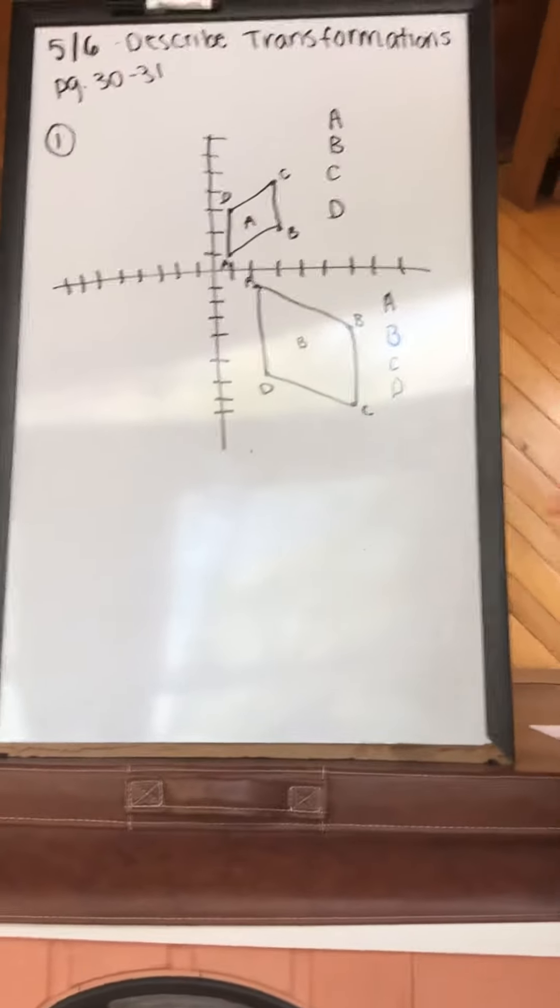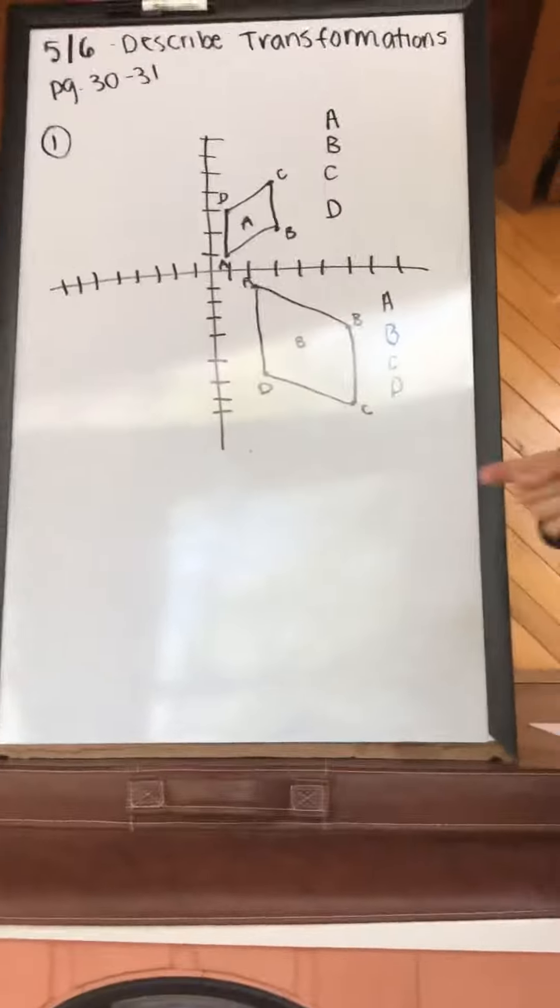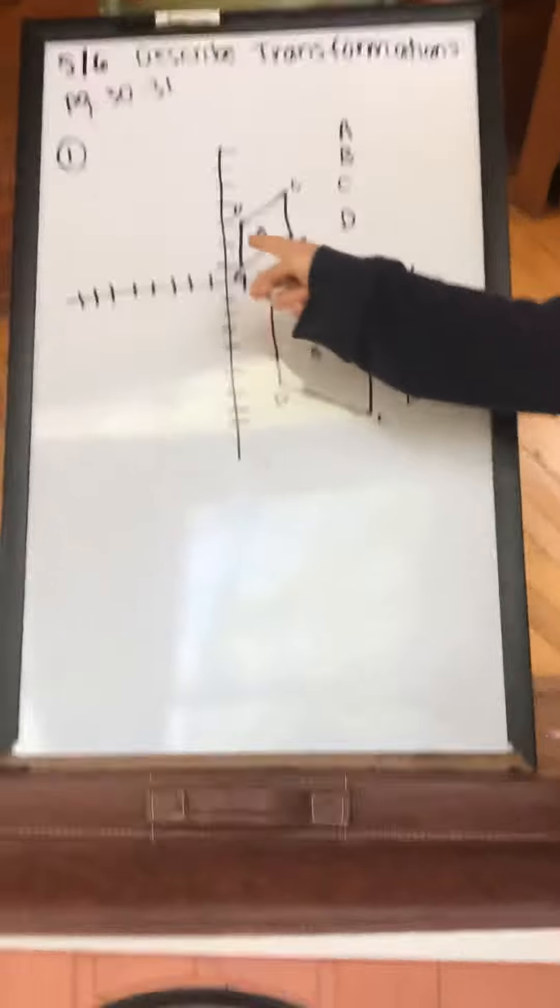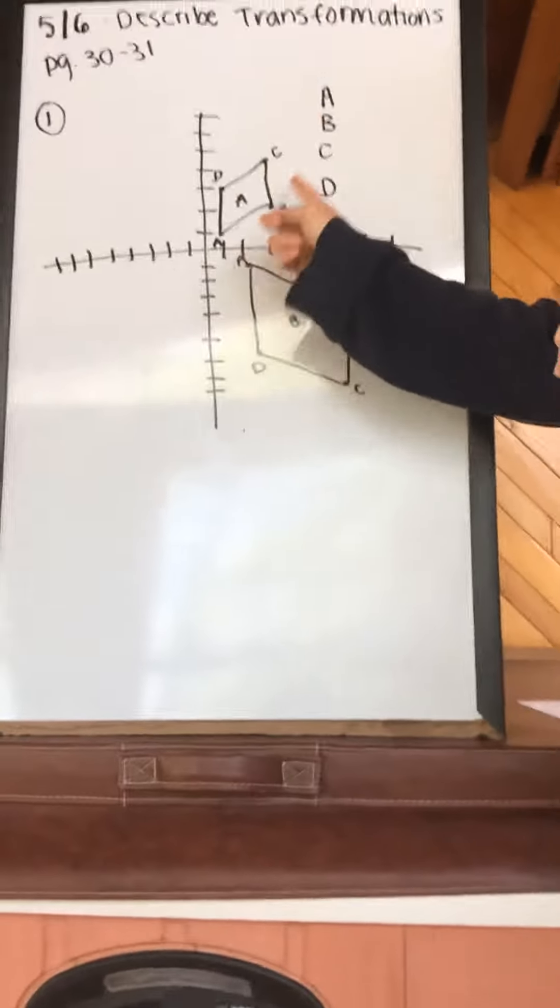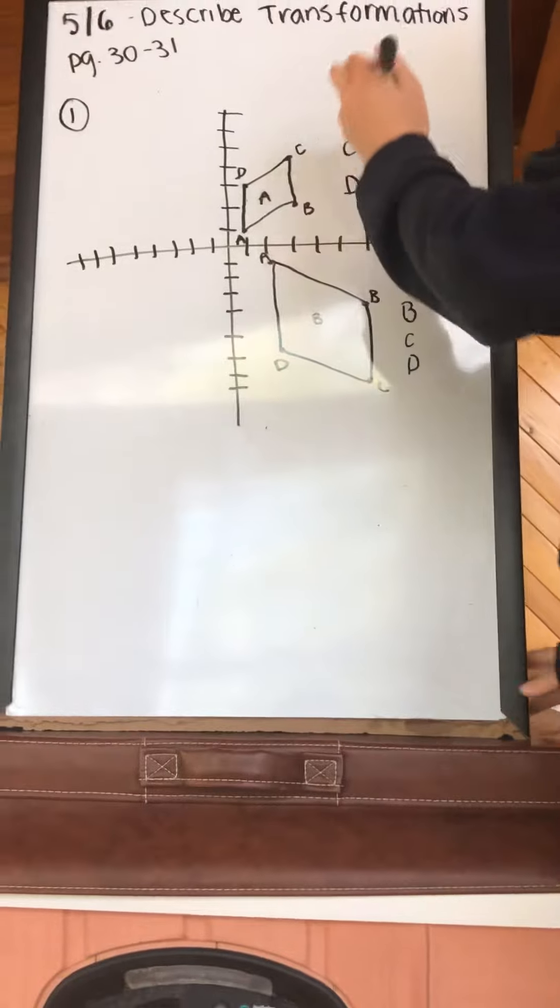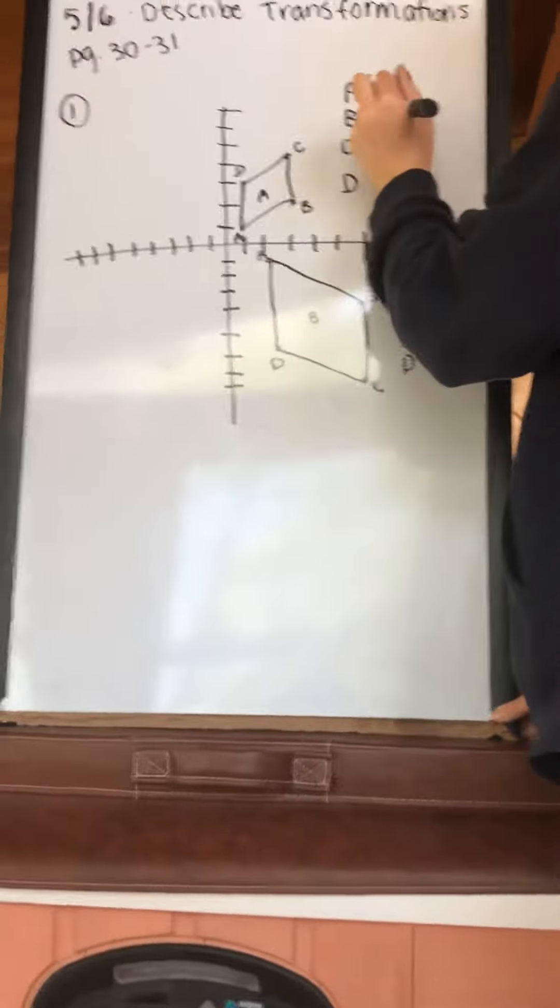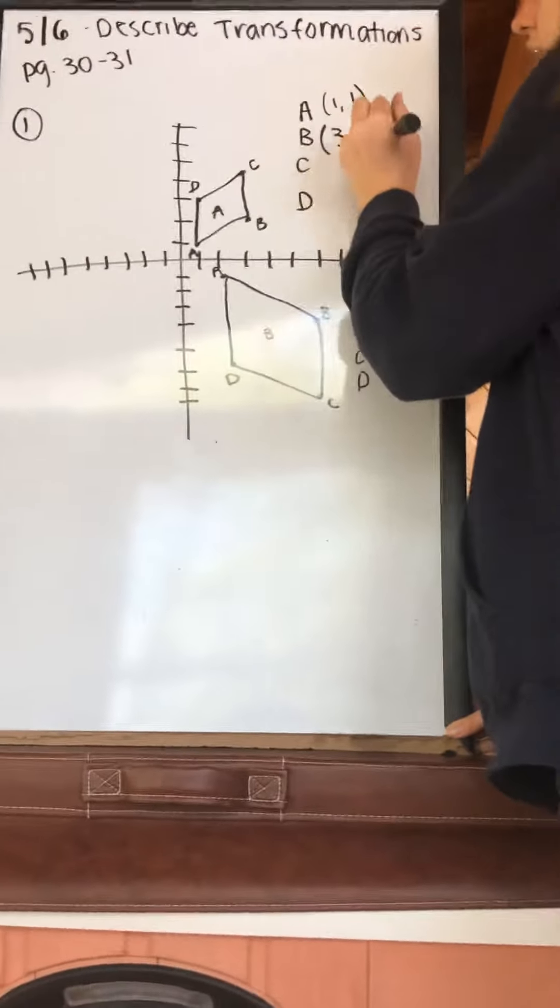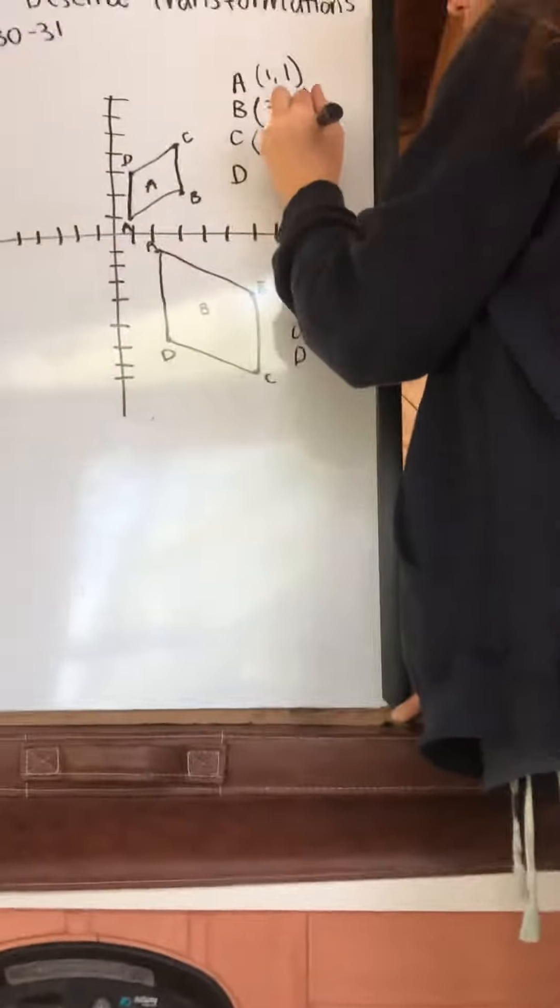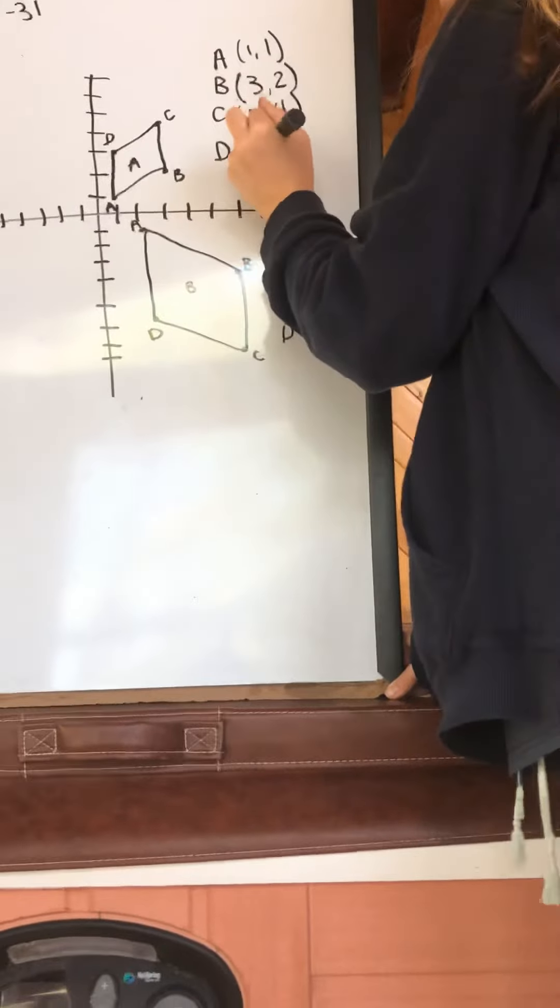The first step is to write down the ordered pair of each coordinate. What I did is I went through and labeled each point on figure A as A, B, C, or D. So it looks like A is at (1,1), B is at (3,2), C is at (3,4), and D is at (1,3).